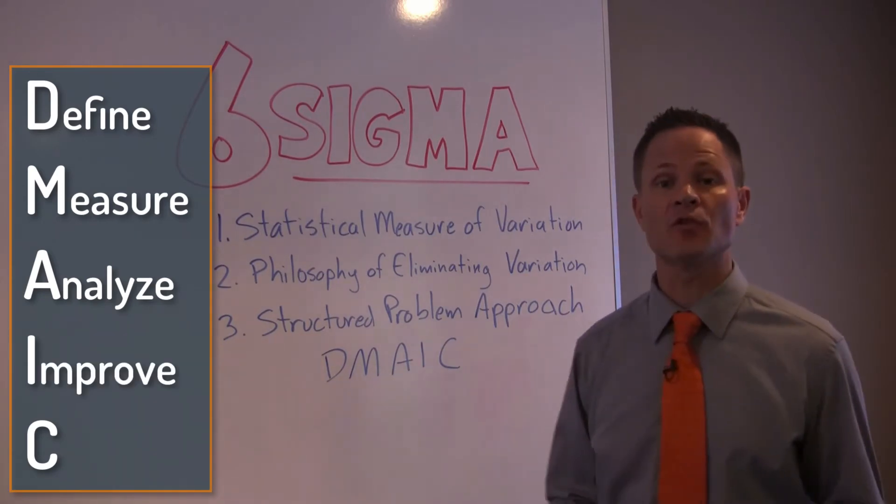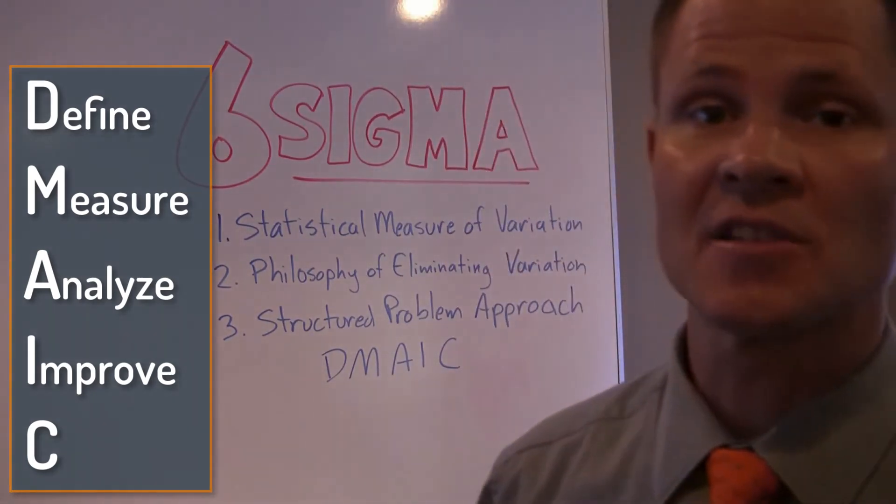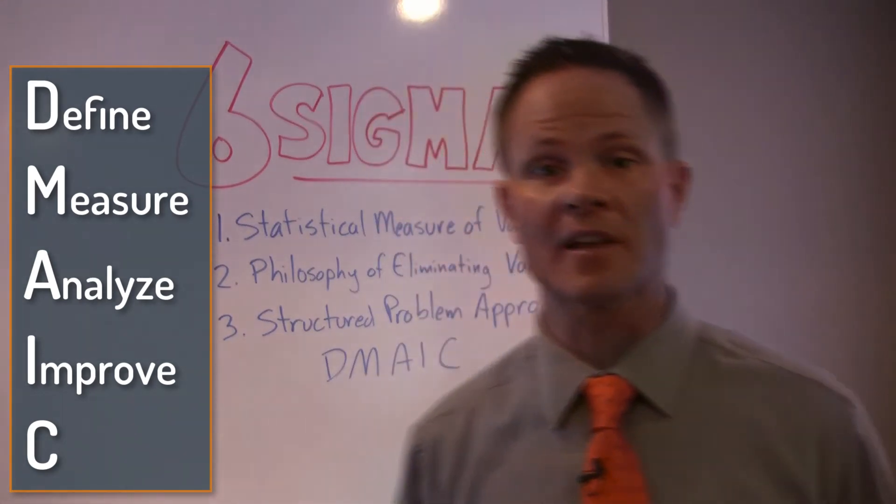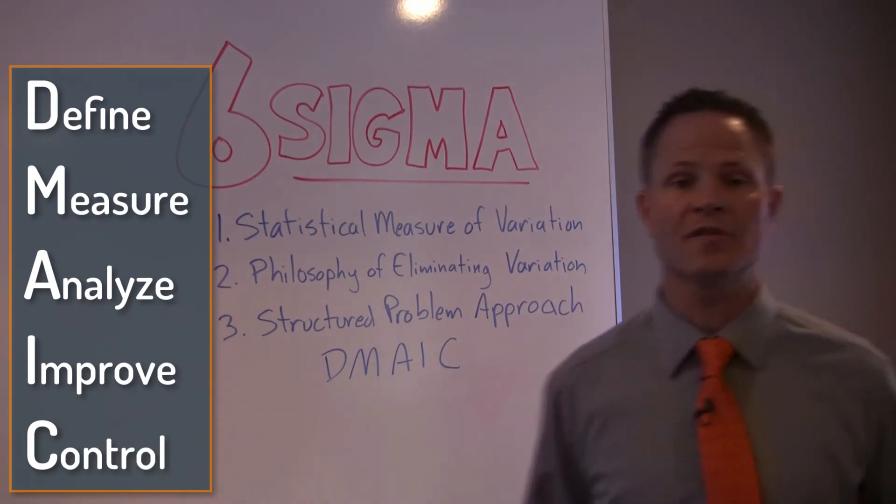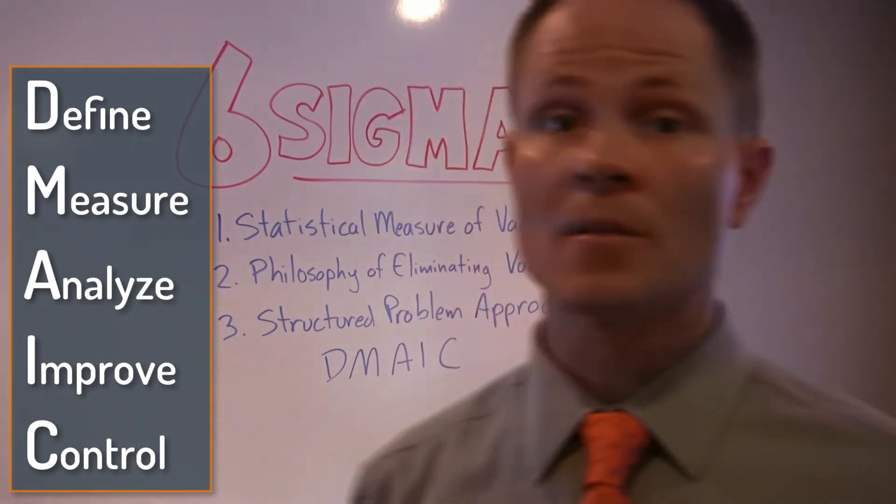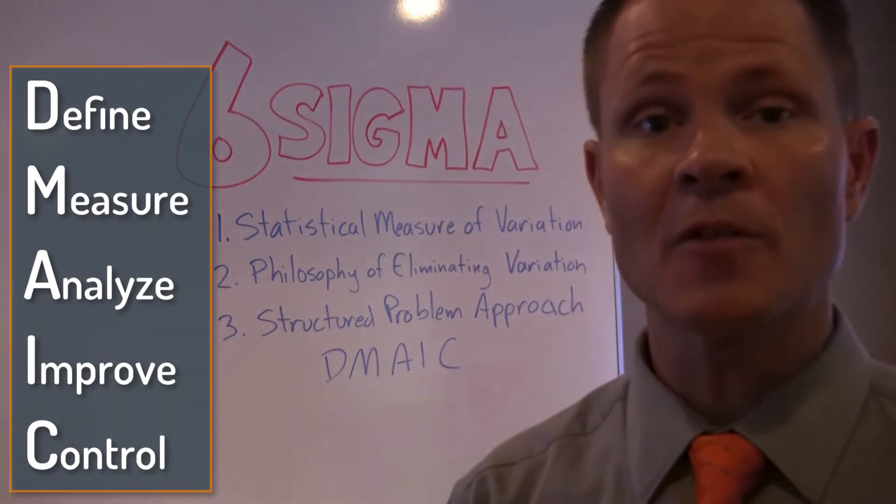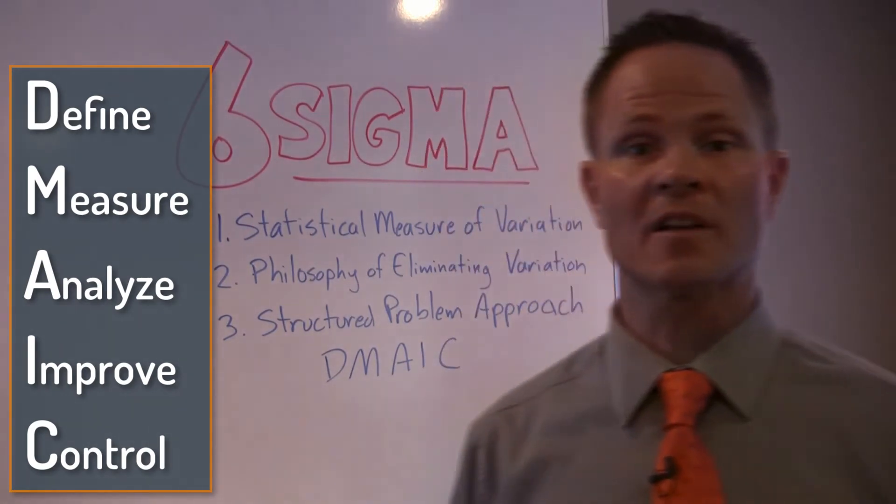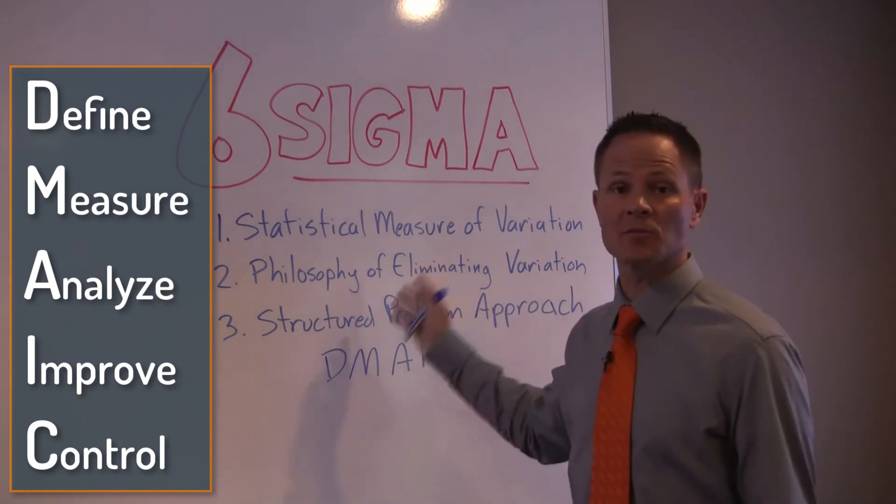The I is for improve. This is when you come up with the best ideas you and your team have to make changes to the process and eliminate that variation. Finally, you go into control. In the control phase, you're simply locking in the gains from your new process. You're putting in standard work, making the process visual, and following up as a leader and a team to make sure the process is running the way you want, and that variation that was causing your problem is gone.